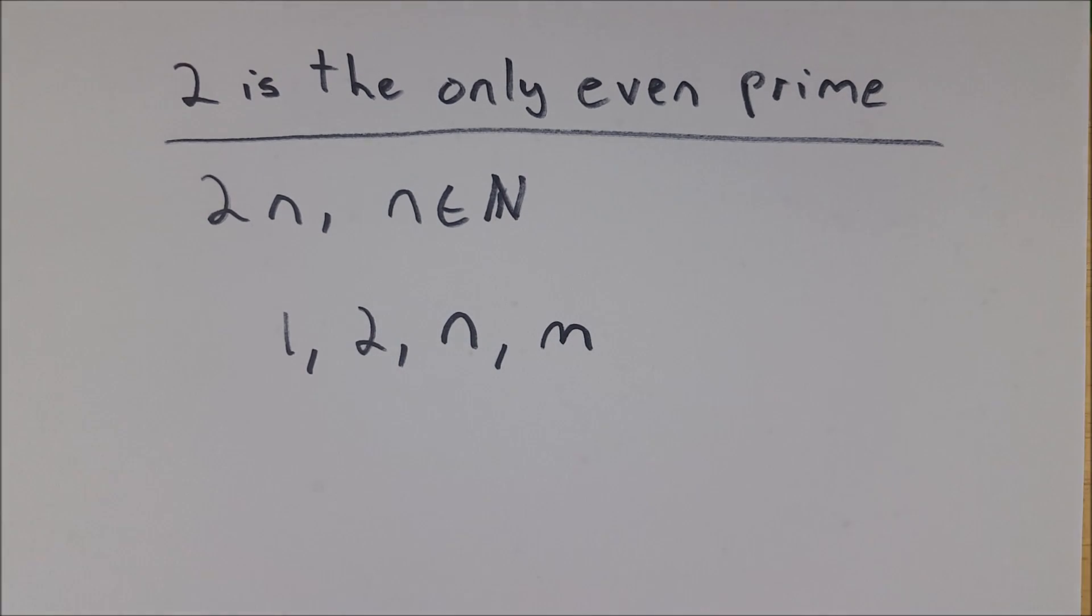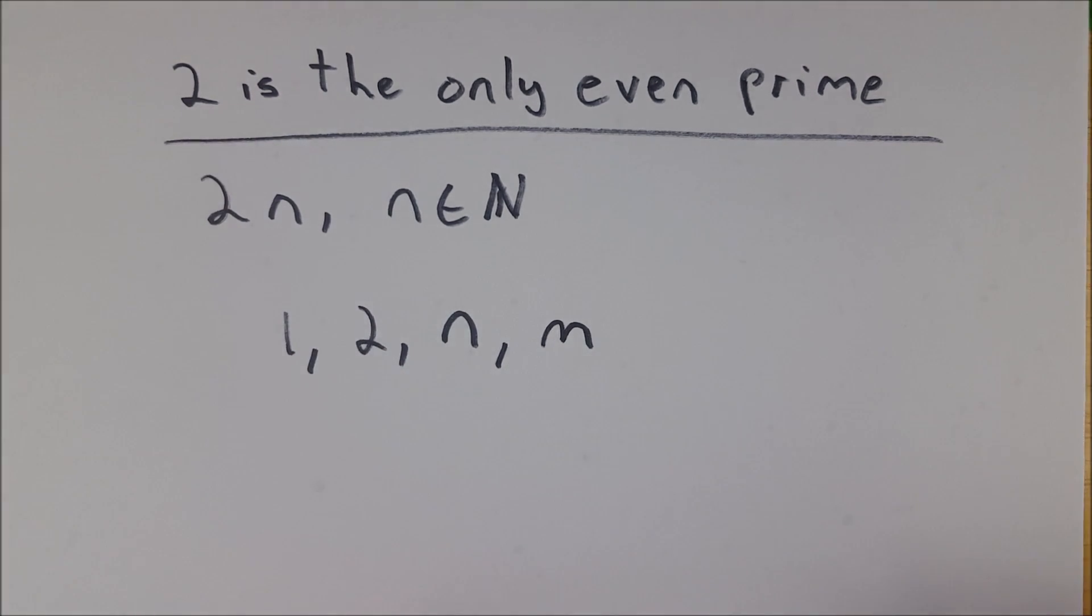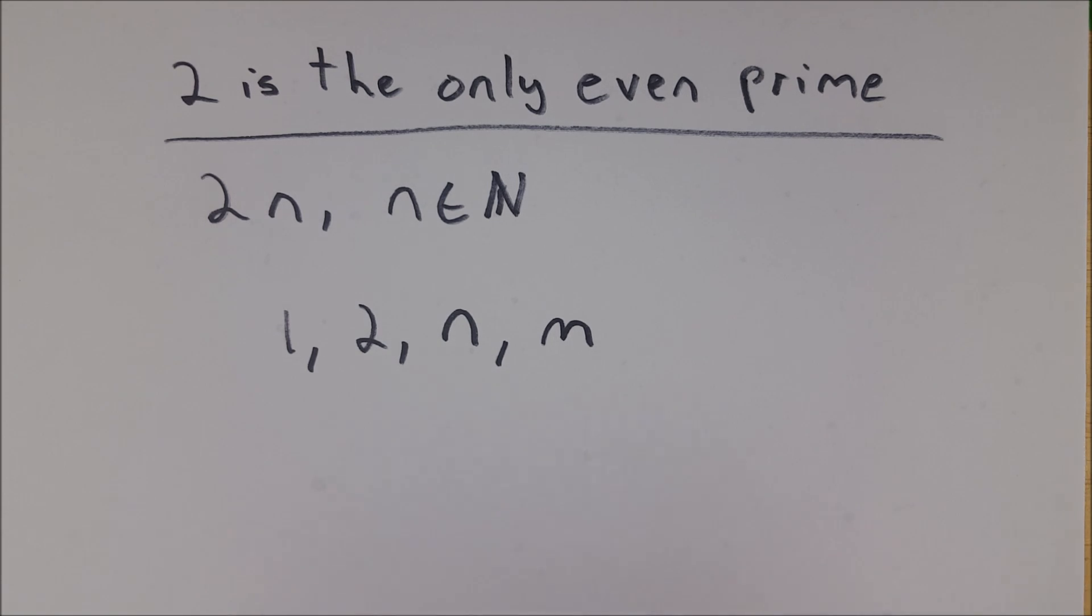And because of that, you know that they cannot be prime. And there's nothing particularly special about saying 2 is the only even prime. It's just a way of saying that 2 is the only prime divisible by 2, which is just as significant as saying that 13 is the only prime number divisible by 13.